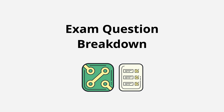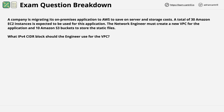Let's jump in and step through the question. This is another interesting style of question, so let's look through it first. A company is migrating its on-premises application to AWS to save on server and storage costs. A total of 30 Amazon EC2 instances is expected to be used for the application. The network engineer must create a new VPC for the application and 10 Amazon S3 buckets to store the static files.